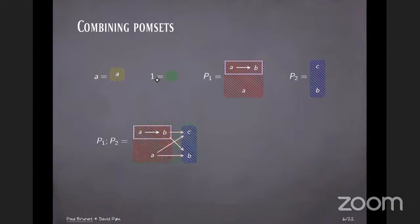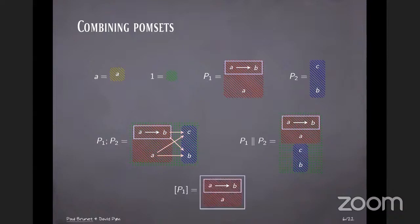And then if we have two Pomsets, P1 and P2, we can compose them in sequence, the disjoint union of the set of events and then ordering every event in the first Pomset below every event in the second Pomset. We can compose them in parallel. And we can also now draw a box around the Pomset.